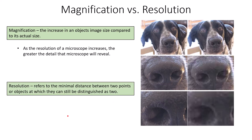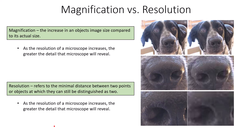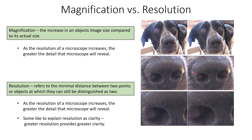Resolution refers to the minimal distance between two points or objects at which they can still be distinguished as two separate points. As the resolution of a microscope increases, the greater the detail it will reveal. Resolution is often explained through clarity — the column on the left provides more clarity and more surface detail than the column on the right, even though the magnification is the same in both. Therefore, the left column has increased resolution.